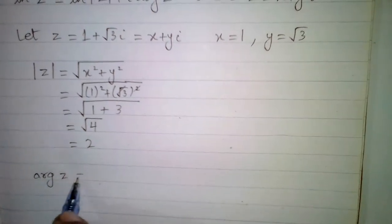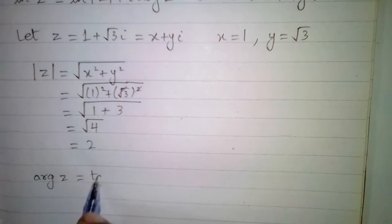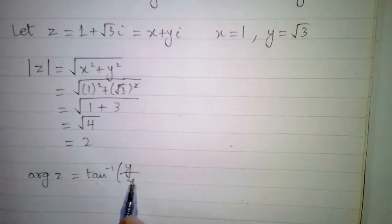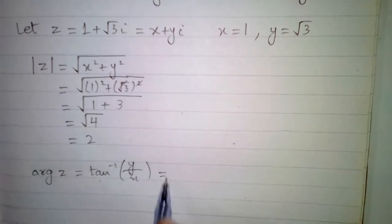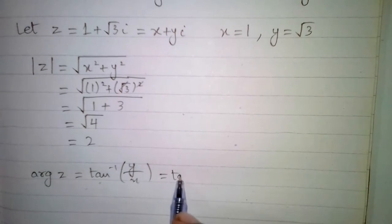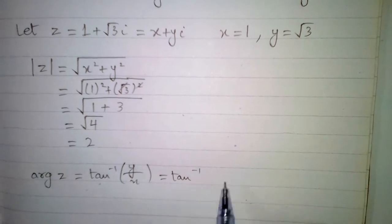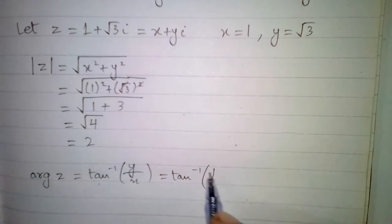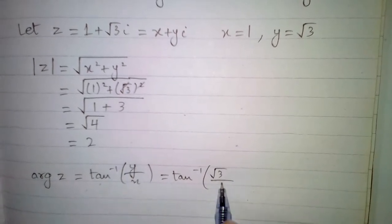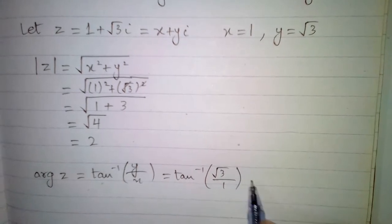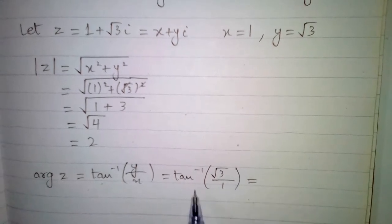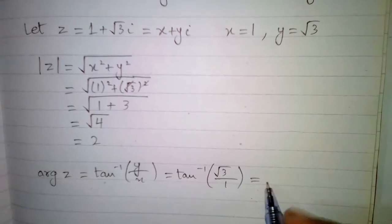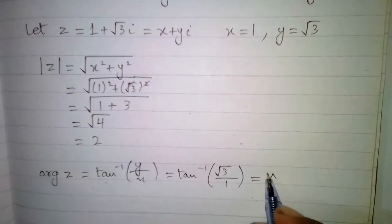Now we will find the argument of z. The argument of z is tan inverse of y upon x. The value of y is root 3 and the value of x is 1, and tan inverse of root 3 is pi by 3. So the argument of z is pi by 3.